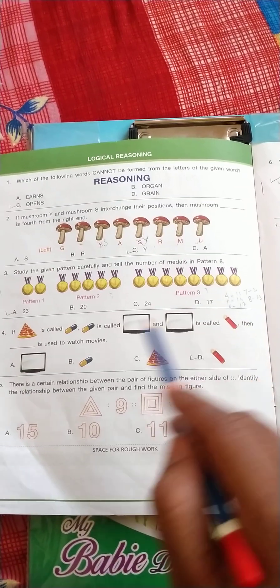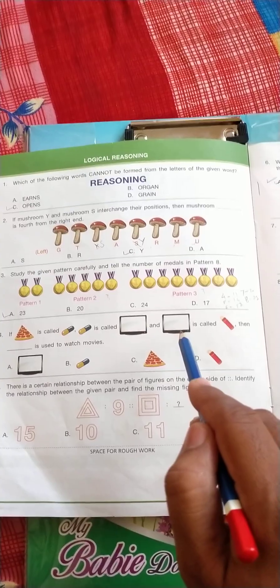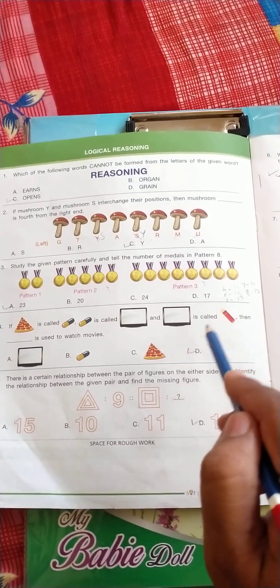If pizza is called tablet, tablet is called television, and television is called cracker, then is used to watch movie. So television is called cracker, so the correct answer is D cracker is used to watch movie.